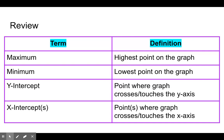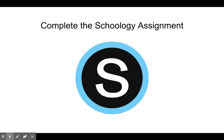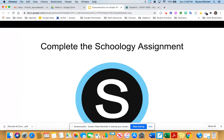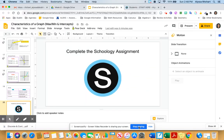To review the terms that we're looking at today: the maximum is the highest point on the graph, the minimum is the lowest point on the graph, the y intercept is the point where the graph crosses or touches the y axis, and the x intercept is the point or points where the graph crosses or touches the x axis. Now you may go ahead and complete the Schoology assignment, take that as many times as you'd like, and ask us if you have any questions.